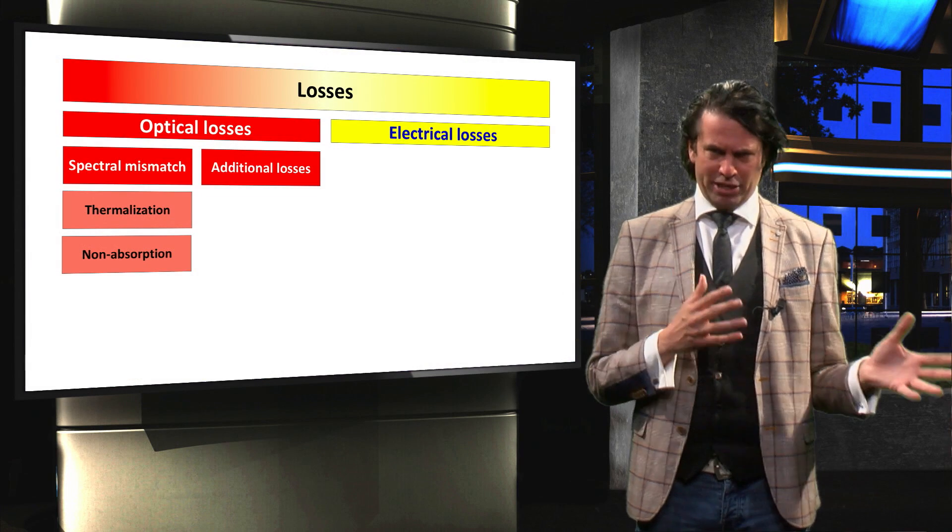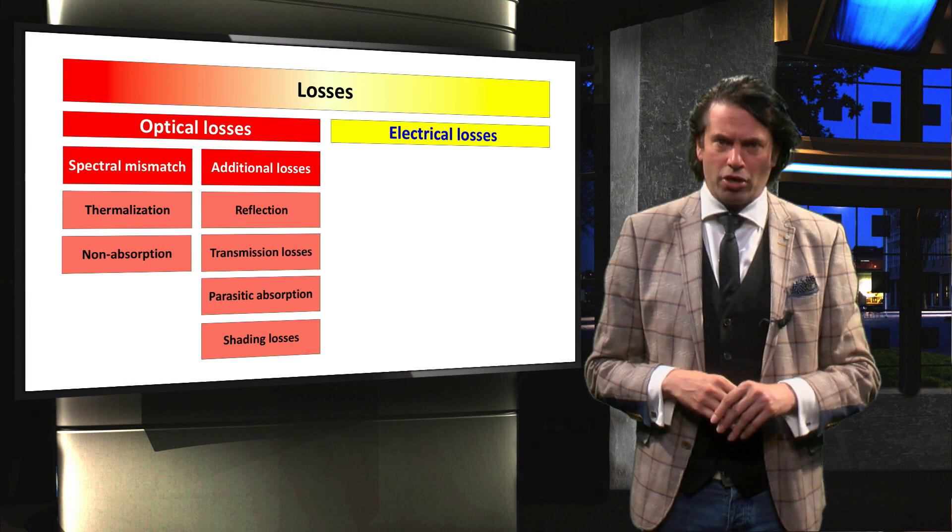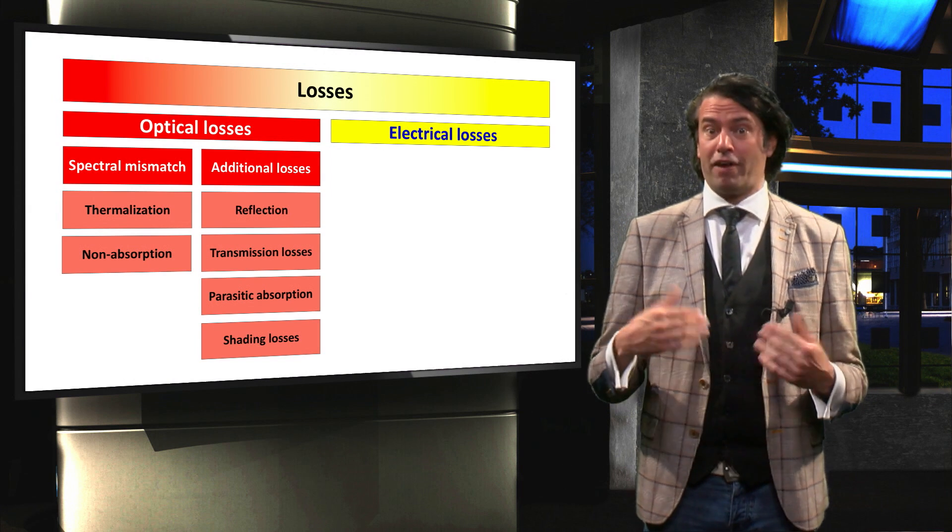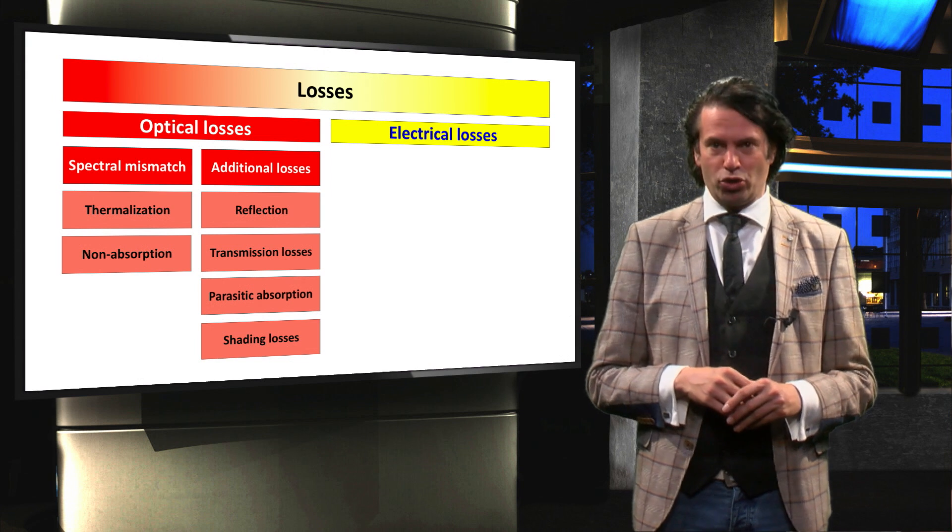We have introduced the spectral mismatch losses. We will now continue with the additional losses that occur in solar cells, such as reflection and transmission losses, parasitic absorption and shading losses.